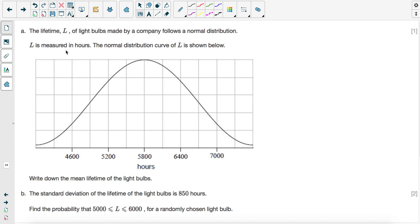So for the first question, we have the lifetime of light bulbs L measured and they have a normal distribution. L is measured in hours and the curve is shown below. The first question wants the mean. Now remember that the normal distribution curve is centered about the mean, which means that right at the center here is your mean value. So that's all you have to do. Mean is equal to 5,800. You didn't need to do any calculations. Always remember to write the units. This is just a one mark question.